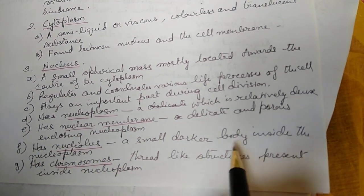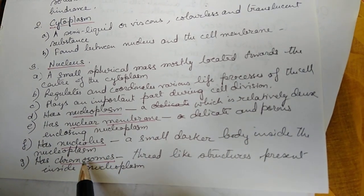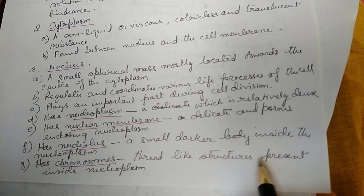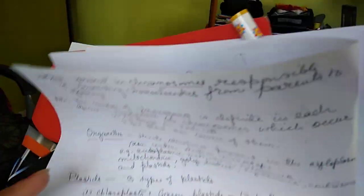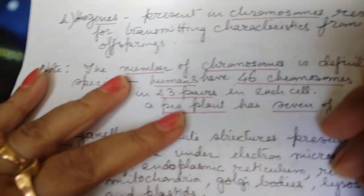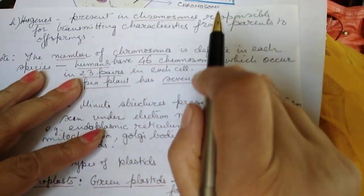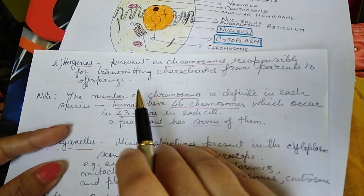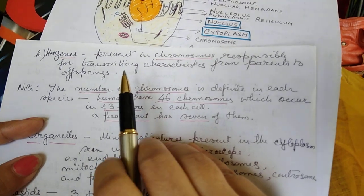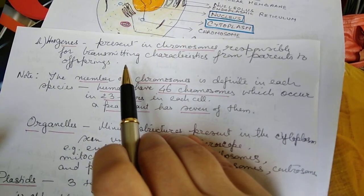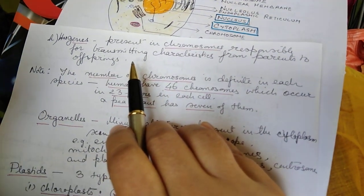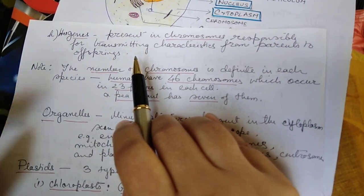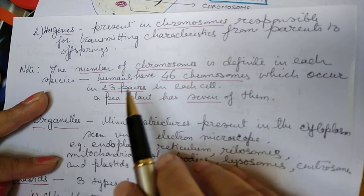It has nucleolus, a small darker body inside the nucleoplasm. It has chromosomes, thread-like structures present inside the nucleoplasm. These chromosomes carry certain characteristics called genes. These characteristics are called genes. These are present in the chromosomes which are responsible for transmitting characters from parents to the offspring.